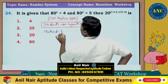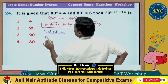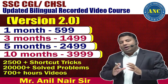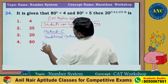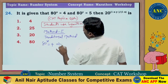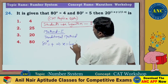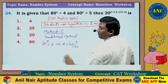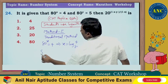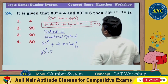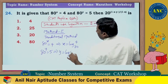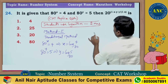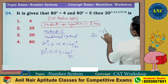First we will discuss Method 1, the traditional method. In the traditional method: 80^x = 4, so they convert into logarithm — x = log 4 base 80. Similarly, 80^y = 5, so y = log 5 base 80.